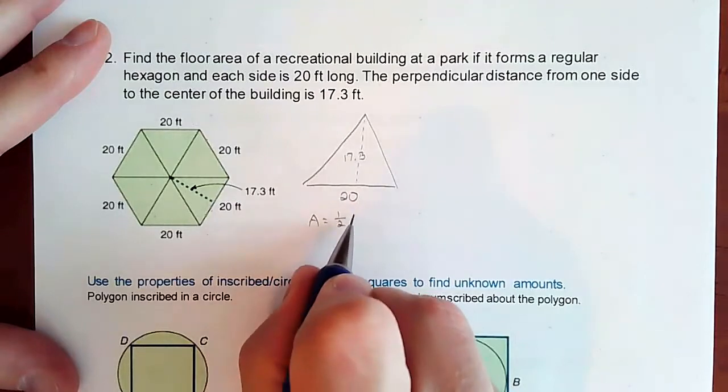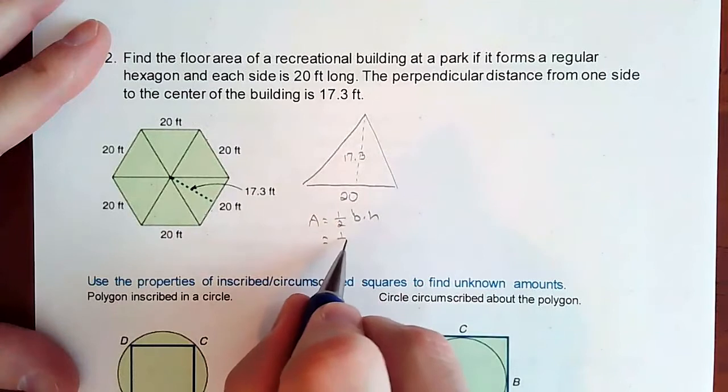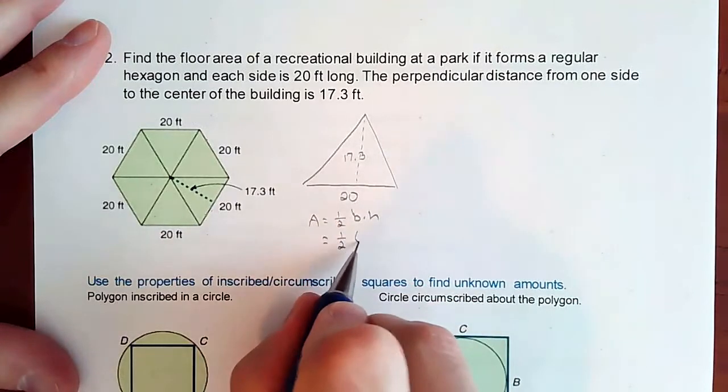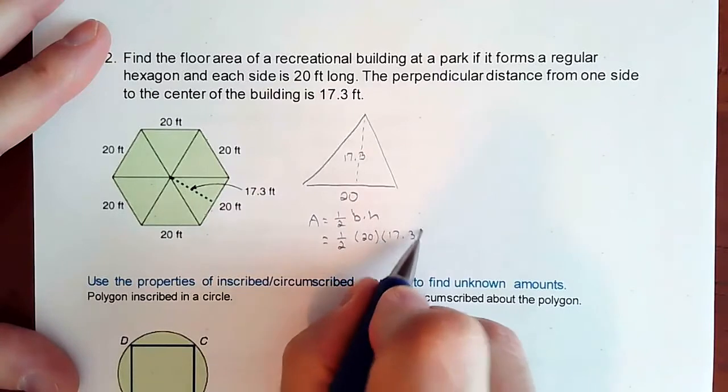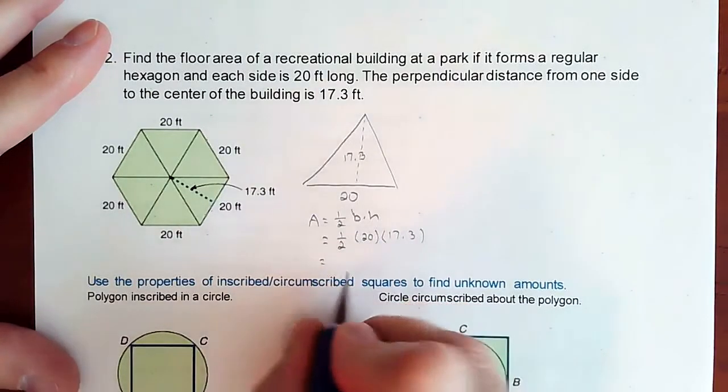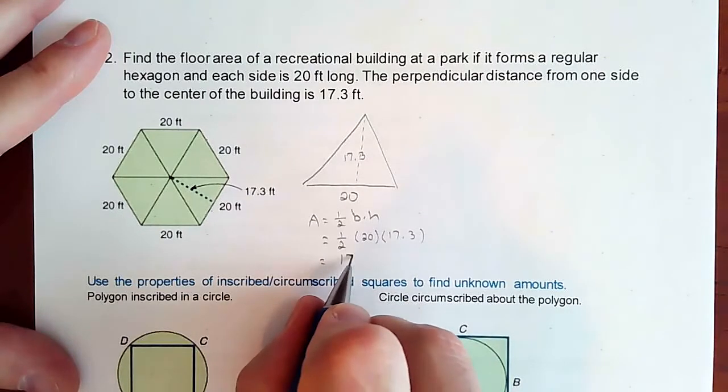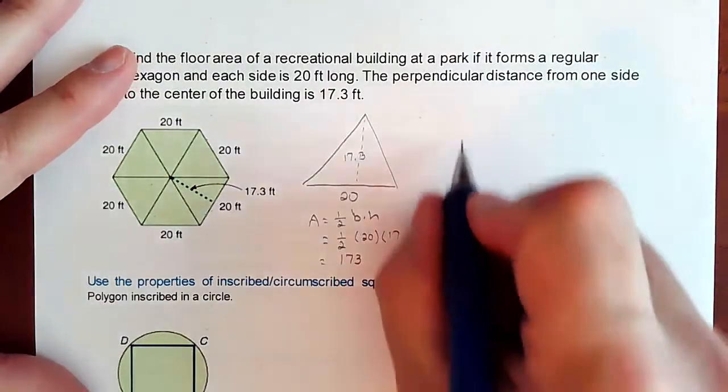It's one half base times height for your triangle. So half base is 20, height is 17.3. Half of 20 is 10. 10 times 17.3 is 173.